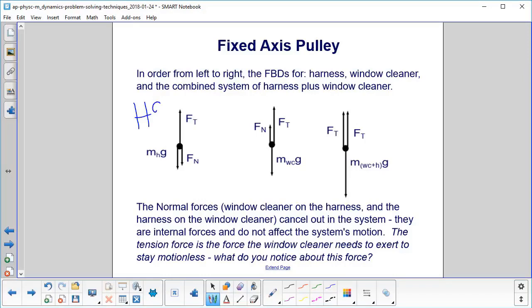Here is the free body diagram for the harness. You have the rope tension pulling it up, the normal from the person sitting on it pushing it down, and gravity pulling you down. Here is the window cleaner. We have the tension force of the rope again, the normal force from the harness pushing up on the window cleaner, and the mass of the window cleaner pulling him down due to gravity. Now if we take a combined system, we have the mass of the window cleaner and the harness pulling you down, and then we have two tension forces here. There's two ropes connecting to the system. The normal forces don't show up on the combined system because they're internal forces and will not affect the system's motion.